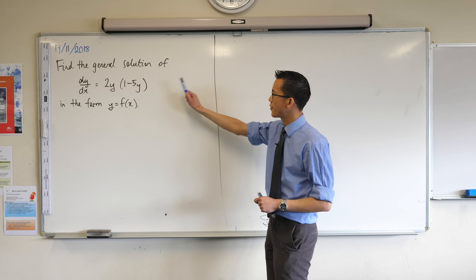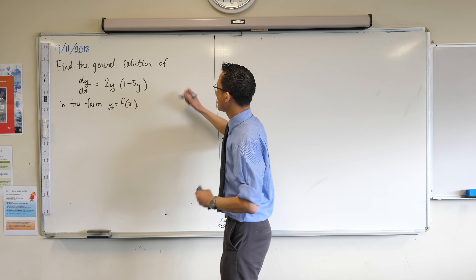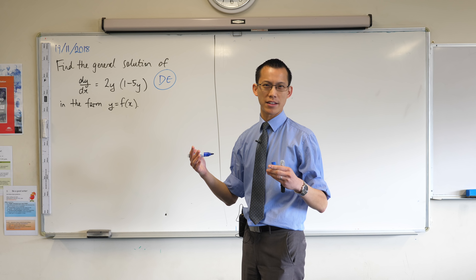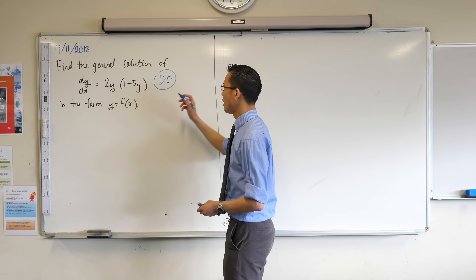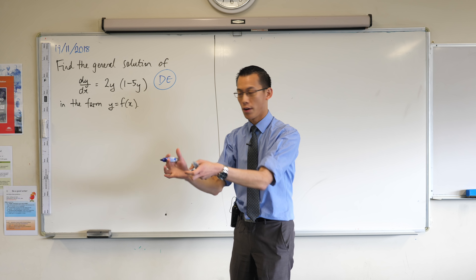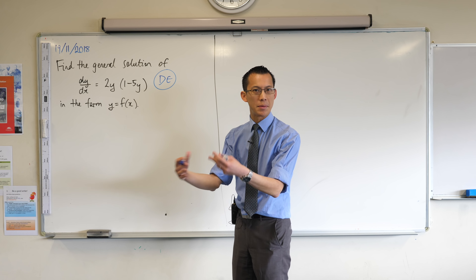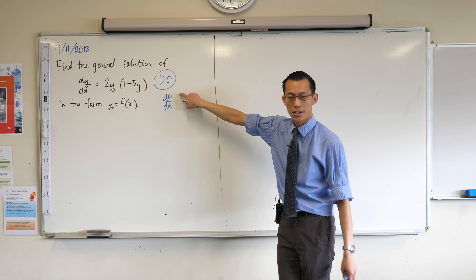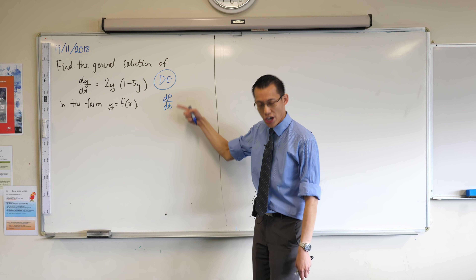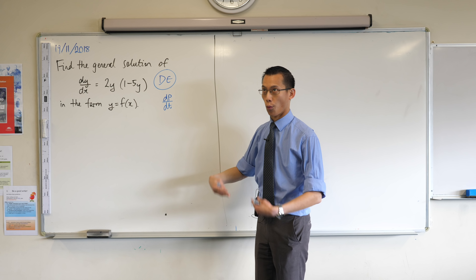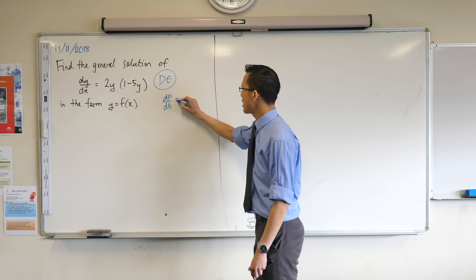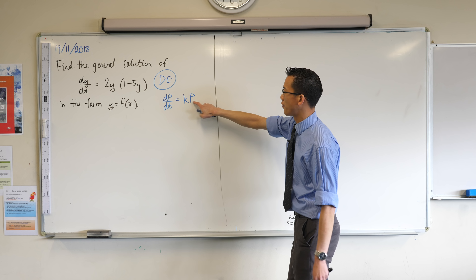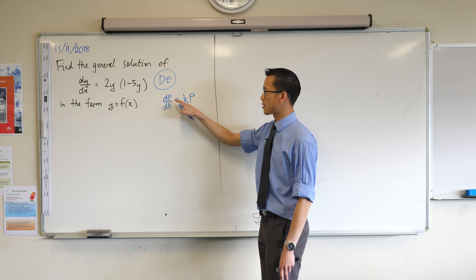What we're having a look at here is a differential equation. We have used differential equations in two units before. If you think back to exponential growth and decay, there's an equation that relates the derivative of a particular variable — something like dp on dt, so there's population and time — and the change in the population with respect to time, the rate of change of the population, is proportional to the population. So that's a differential equation: it relates a function to its derivative.